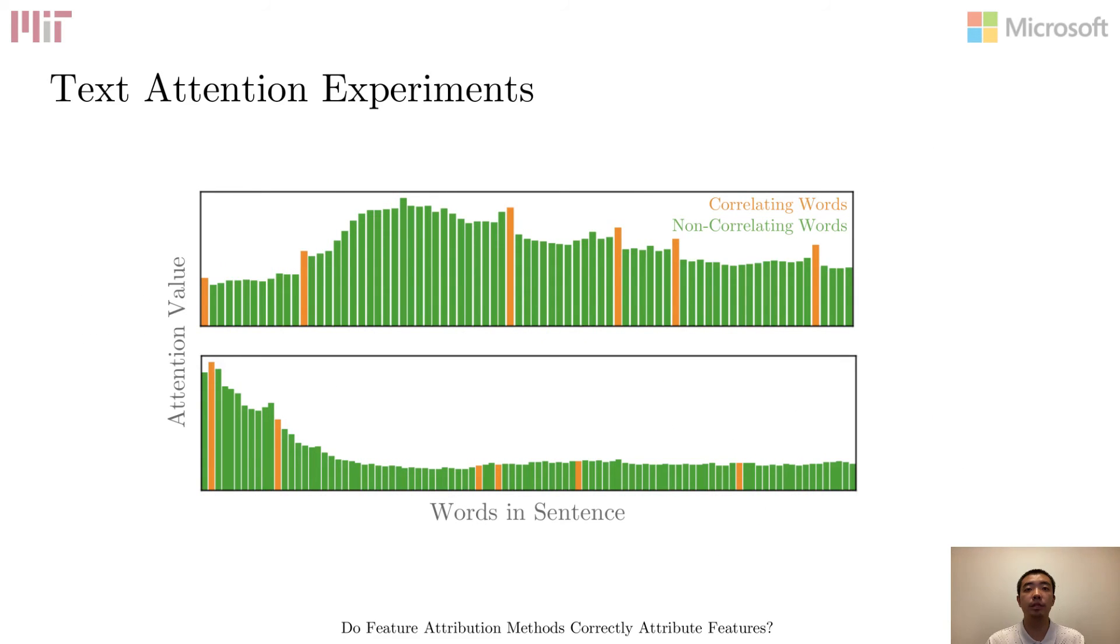The attention patterns for two sentences are shown below, with each bar corresponding to the weight for a token. Orange bars are weights for article words, and green bars are those for non-article words. We fail to find convincing evidence to support that attentions can be considered as explanations because these attentions for correlated words at most stand out locally but get easily overwhelmed by global variations or fail to stand out at all.